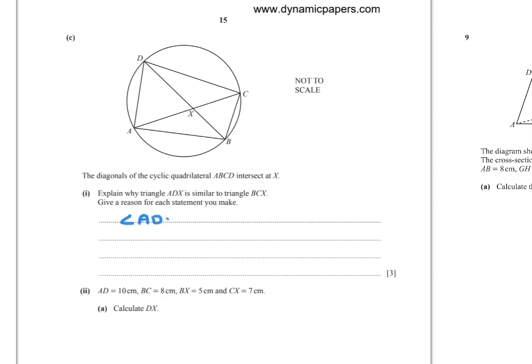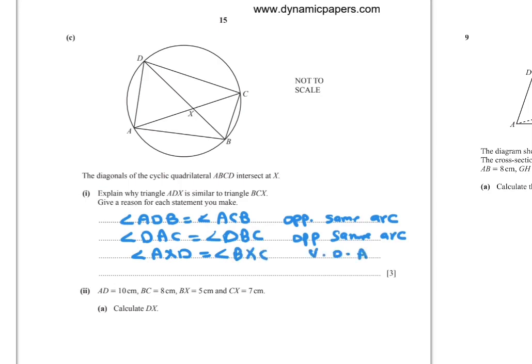So write the working. Angle ADP equals angle ACP because opposite to the same arc. Same, angle DAC and angle DBC are equal because opposite to the same arc or same chord. Now angle AXD equals angle BXC, vertically opposite angles. So triangles are similar.